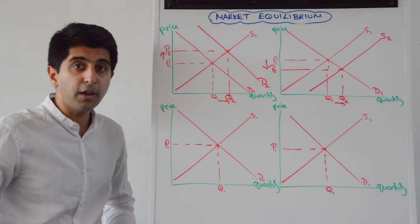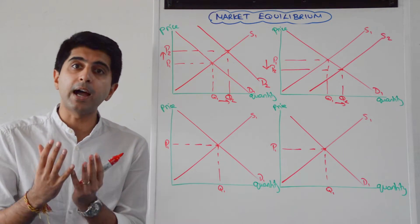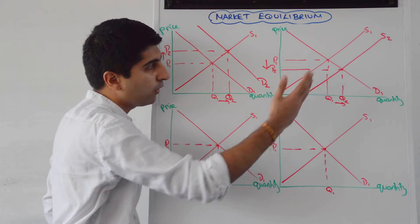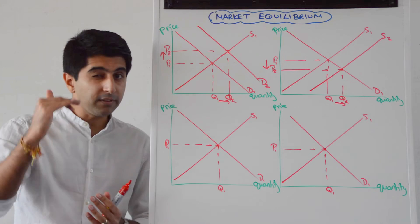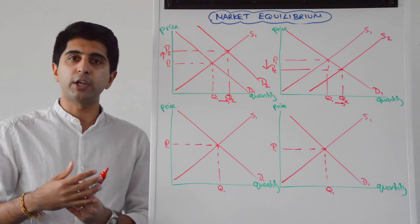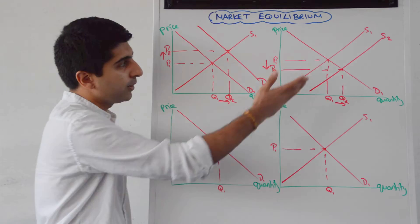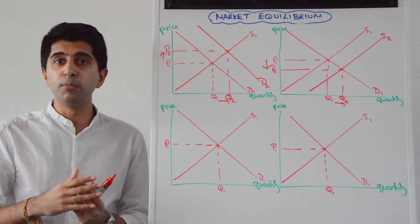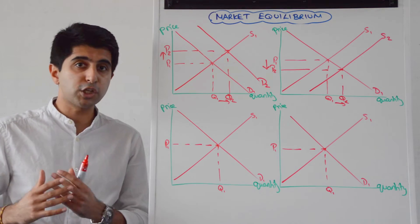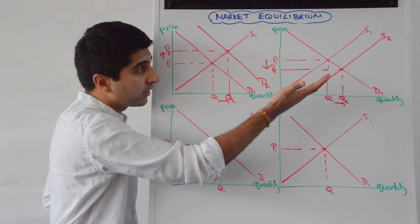So whenever we shift the supply curve, remember generally, we think costs of production. If supply is shifting right, we think, oh, there might be a falling cost of production. An increase in the number of firms, an improvement in technology, maybe it's a subsidy granted or an increase in the size of the subsidy that's granted, maybe it's good weather.